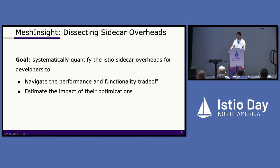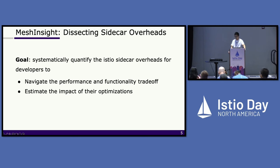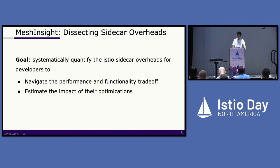To this end, we built MeshInsight to systematically quantify the ECU sidecar overhead to enable two important use cases. First, we want to help ECU users to navigate the trade-off between performance and functionality. And also, for ECU developers to be able to estimate the impact of configurations to make informed decisions. We consider two primary measures of overhead in this work: latency and CPU usage overhead. MeshInsight is built mostly for sidecar mode, but we believe it can be extended to the ambient mesh that is coming up.